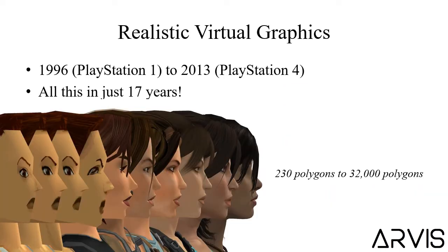To give an example using consumer games, the bottom left shows the evolution of the Tomb Raider model from 1996 to 2013. I picked this example because the model on the far left was created when I was born, and the model on the far right was created when I was just 17 years old. This is an evolution from a model made of 230 polygons to 32,000 polygons.